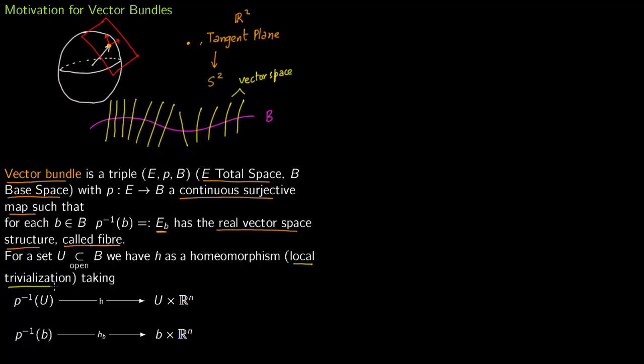Taking P inverse of U to U times R^n. So here this R^n is just R. So say this space E is B times R, so this is how it will look like. So for any open set you have U times R^n and for every fiber also you have P inverse of b, H of b is b times R^n.